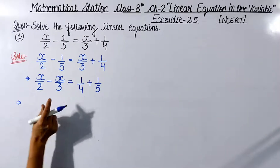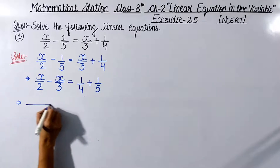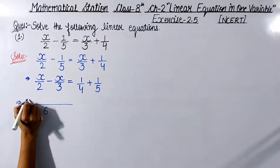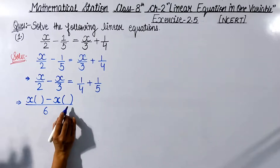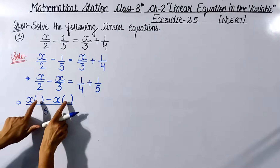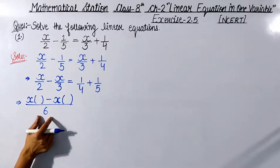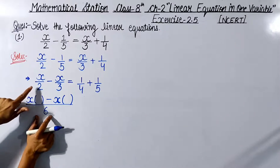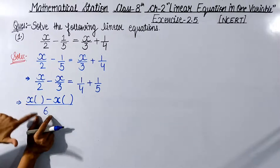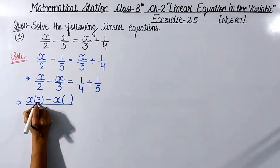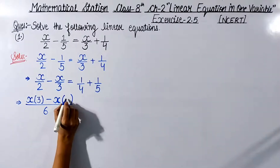Now, x upon 2 minus x upon 3 — these two terms are in fraction form. We take the LCM of 2 and 3, which is 6. The denominator becomes 6. In the numerator, we divide 6 by 2 to get 3, so we write 3x, then minus, and divide 6 by 3 to get 2, so we write 2x. The LHS becomes 3x minus 2x upon 6.